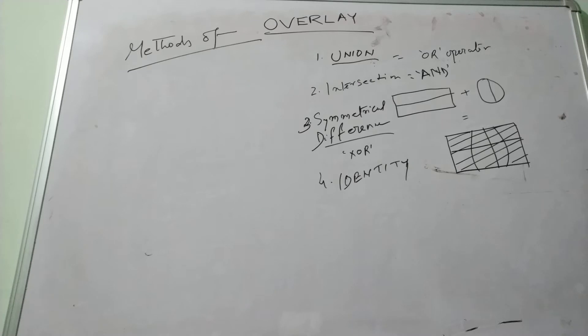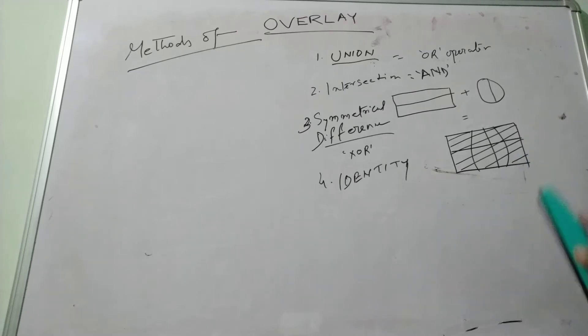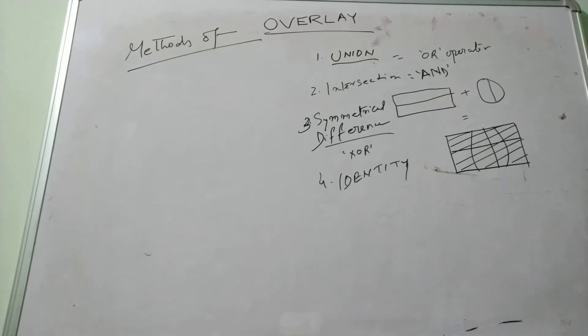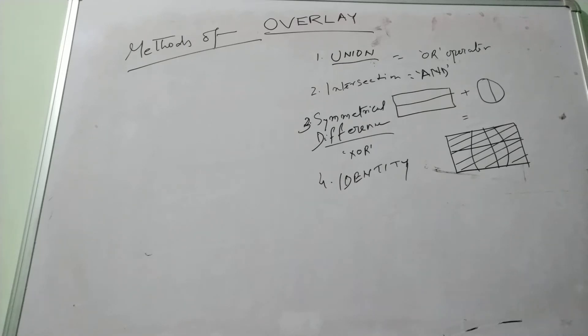These are the overlay methods that are used in the overlay function to create a new output of two or more thematic layers in a GIS database.